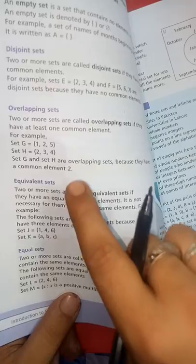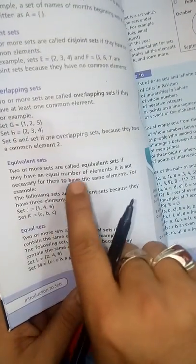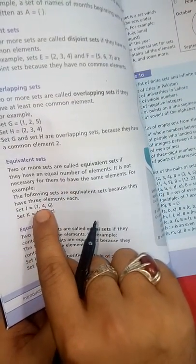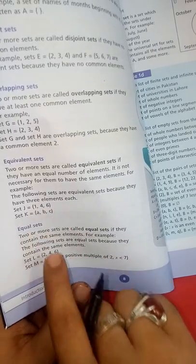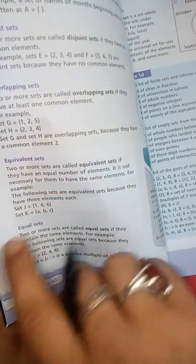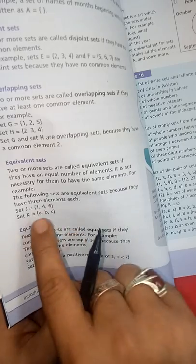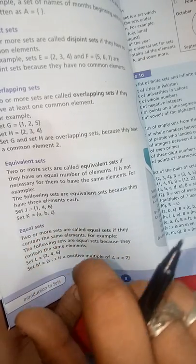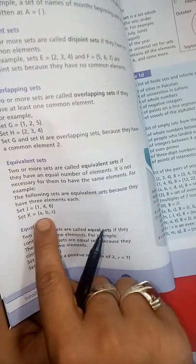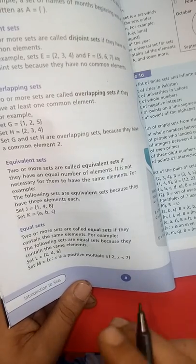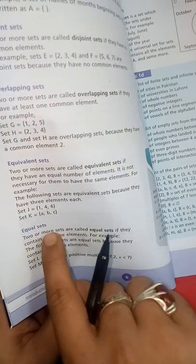Let us study the equivalent set and the equal sets. In both, the number of elements is the same. Equivalent sets have the same number of elements, like {1, 2, 3} and {a, b, c}, both have three elements. But the nature of the elements is different—one is numeric and one is alphabetical.